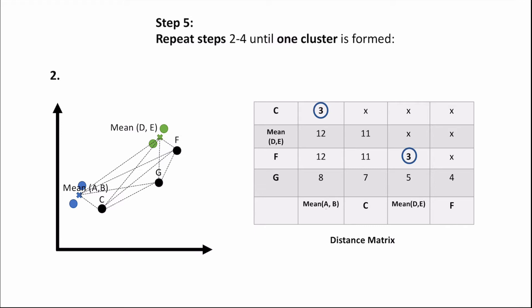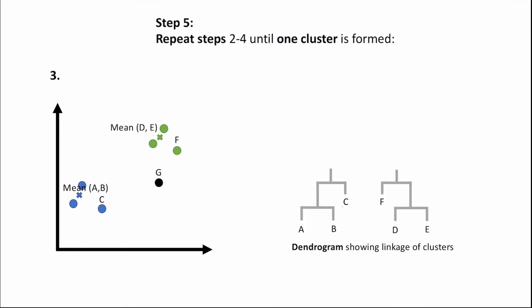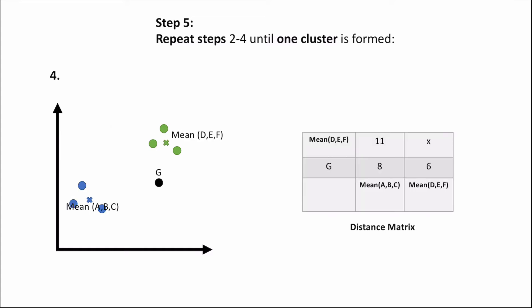Going back to step two, we identify the clusters closest to each other — in this case the cluster containing A and B with C, and the cluster containing D and E with F. For step three, we link these clusters together: point C is linked with the cluster containing A and B, and point F is linked with the cluster containing D and E. For step four, we calculate and record the new distances in a distance matrix.